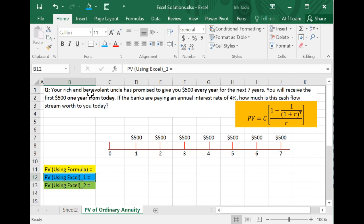Let's suppose that your rich and benevolent uncle has promised to give you $500 every year for the next seven years. So this is an annuity. Why? Because you're going to get the same cash flow, you're going to get it every year, and you are going to get it for a set number of years which is seven years.